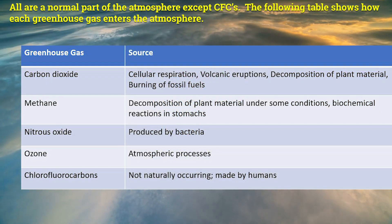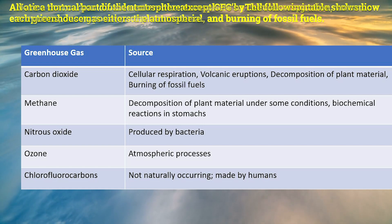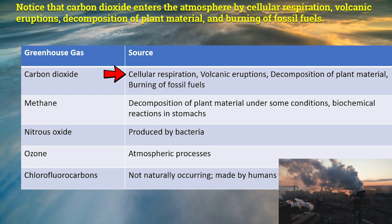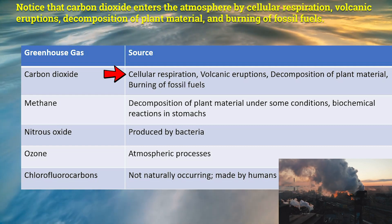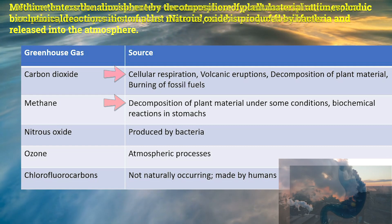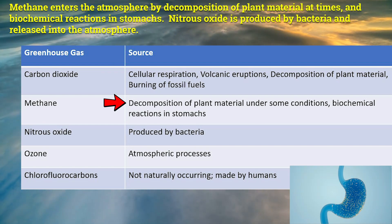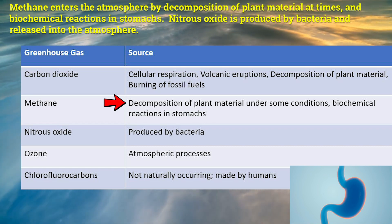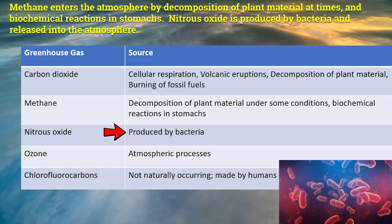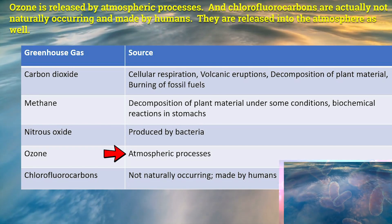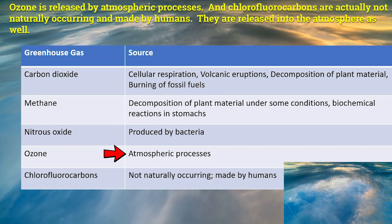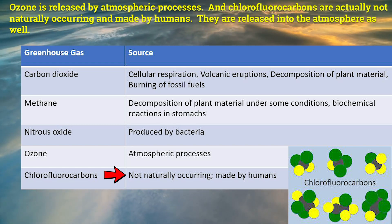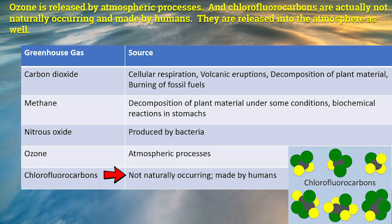The following table shows how each greenhouse gas enters the atmosphere. Carbon dioxide enters by cellular respiration, volcanic eruptions, decomposition of plant material, and burning of fossil fuels. Methane enters by decomposition of plant material and biochemical reactions in stomachs. Nitrous oxide is produced by bacteria and released into the atmosphere. Ozone is released by atmospheric processes, and chlorofluorocarbons are not naturally occurring — they are made by humans and released into the atmosphere.